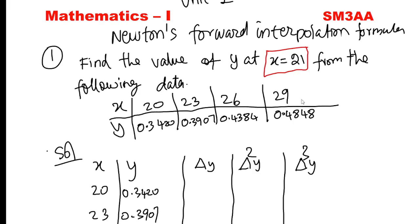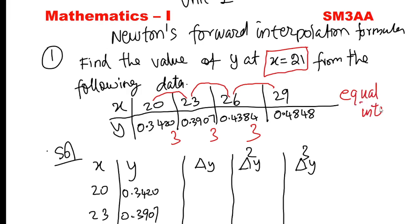The difference between 20 and 23 is 3, between 23 and 26 is 3, and so on — so the interval is equal. If the interval is equal, we apply Newton's forward or backward method. Since x equal to 21 is near the front of the data (close to 20, 23), we use Newton's forward interpolation formula.